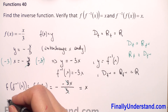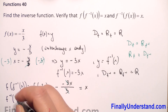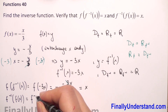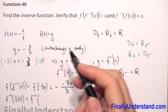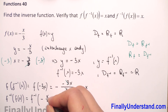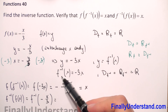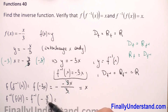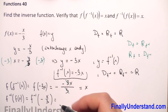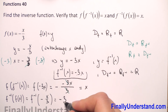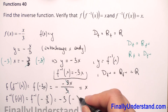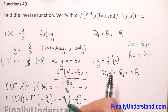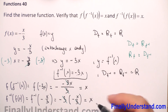For the second composition, f-inverse of f of x: f of x is negative x over 3. The formula for f-inverse is negative 3x, so we substitute x with negative x over 3. We get negative 3 times negative x over 3. Negative times negative gives positive, and 3 with 3 reduces, giving us x. The second composition is also equal to x, confirming our inverse is correct.